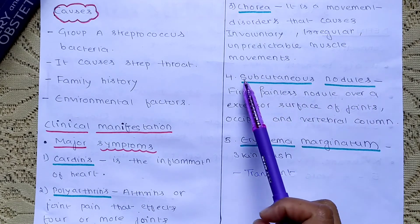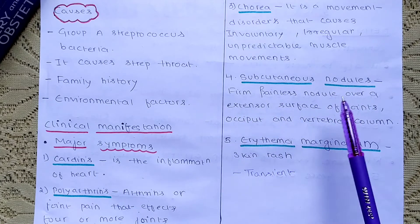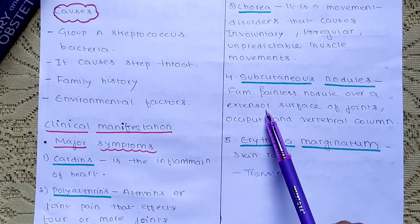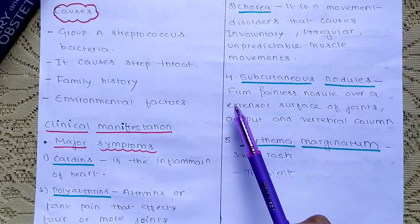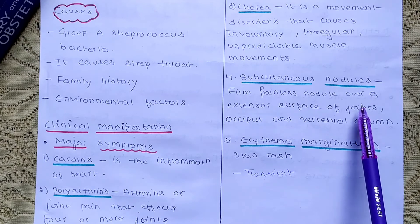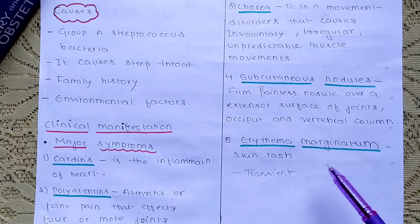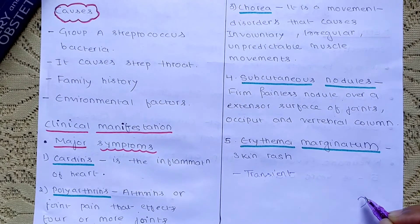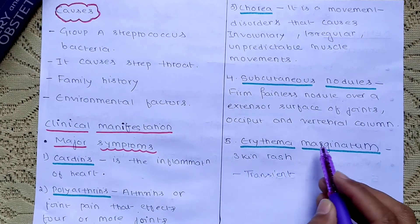Subcutaneous nodules — subcutaneous refers to the third layer of skin. Nodules are abnormal growths of tissue. These are firm, painless nodules over the extensor surface of certain joints, such as the knee and elbow joints. These are called subcutaneous nodules.